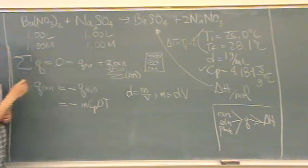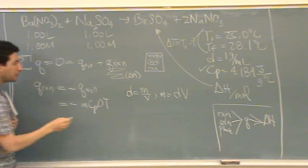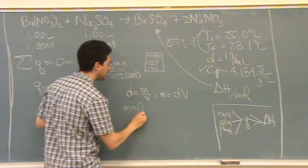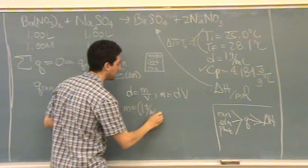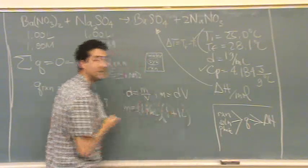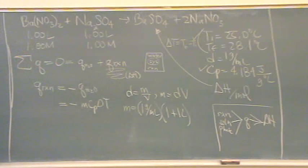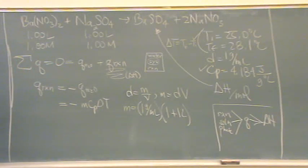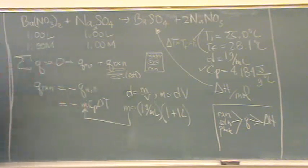You do have density. And the sum of these is the total volume. So mass is density, one gram per mil, times the total volume, one plus one meters, two. There's the mass. So that mass goes right in there.